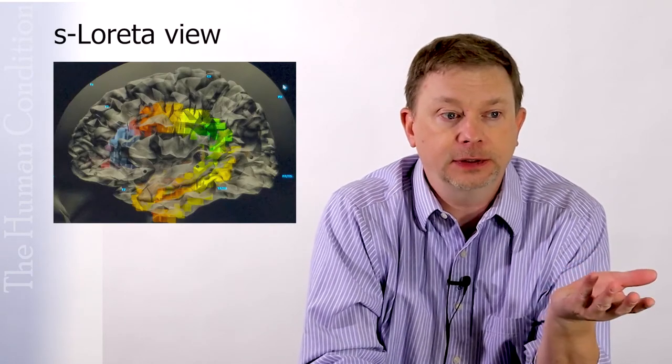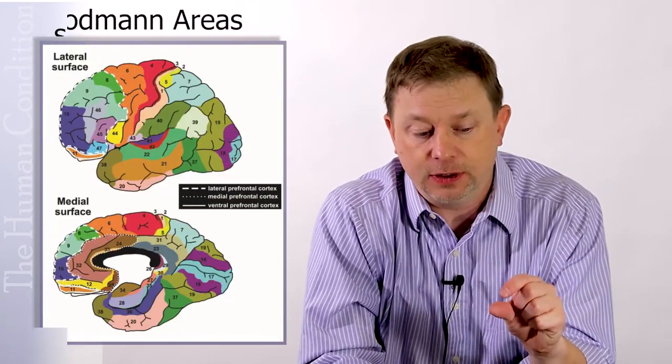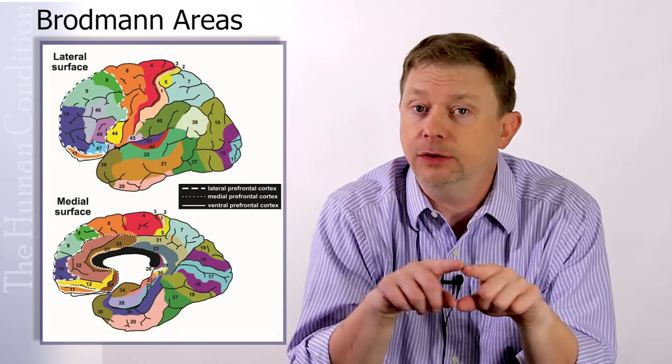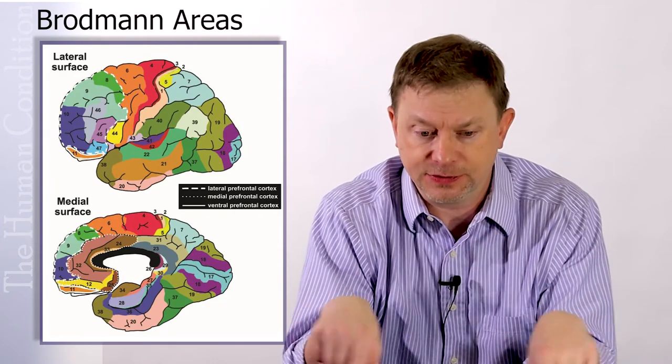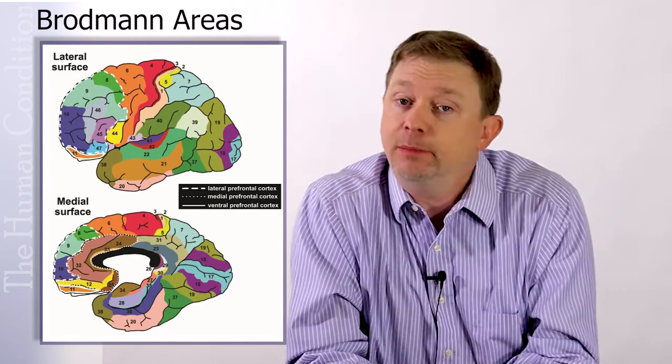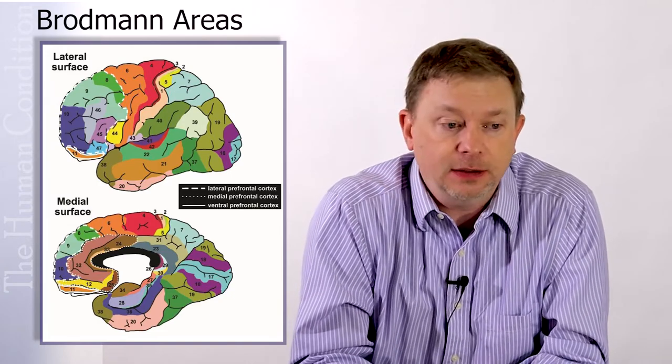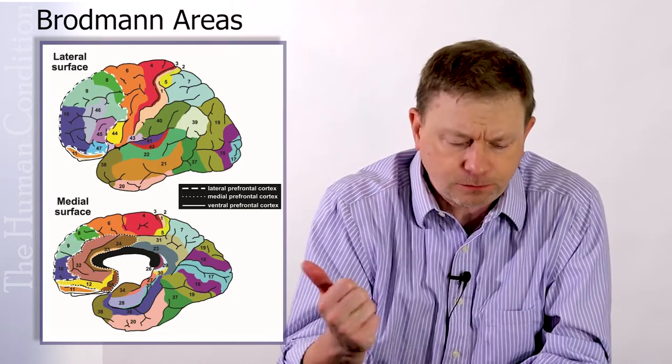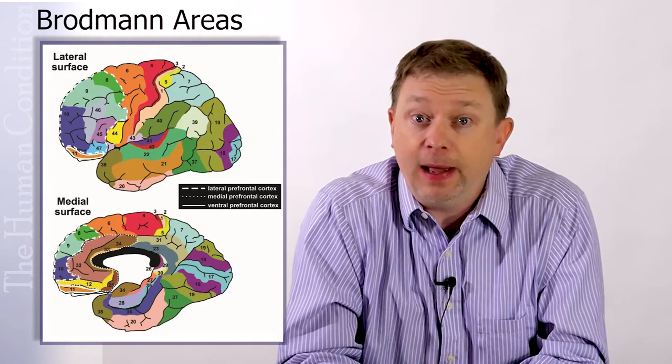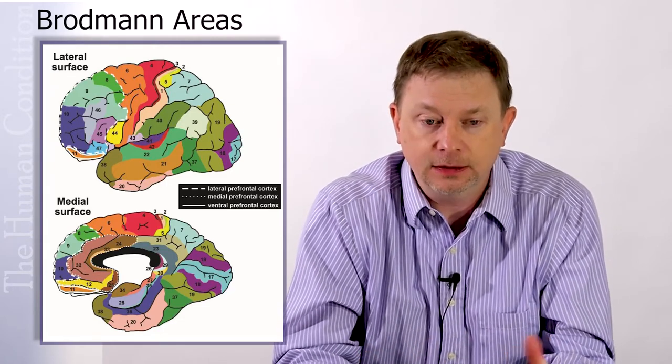Now, there's a thing called a Brodmann area, which is a region of the brain. It's like real estate. It's like the map of your lot in your home where you live. And so your lot has a boundary around it. And those boundaries are all irregular, like a map. And so the map of the brain has these Brodmann areas named after Corbinian Brodmann from the turn of the century, early 1900s. And Corbinian Brodmann mapped all these different parts of the brain and their function.